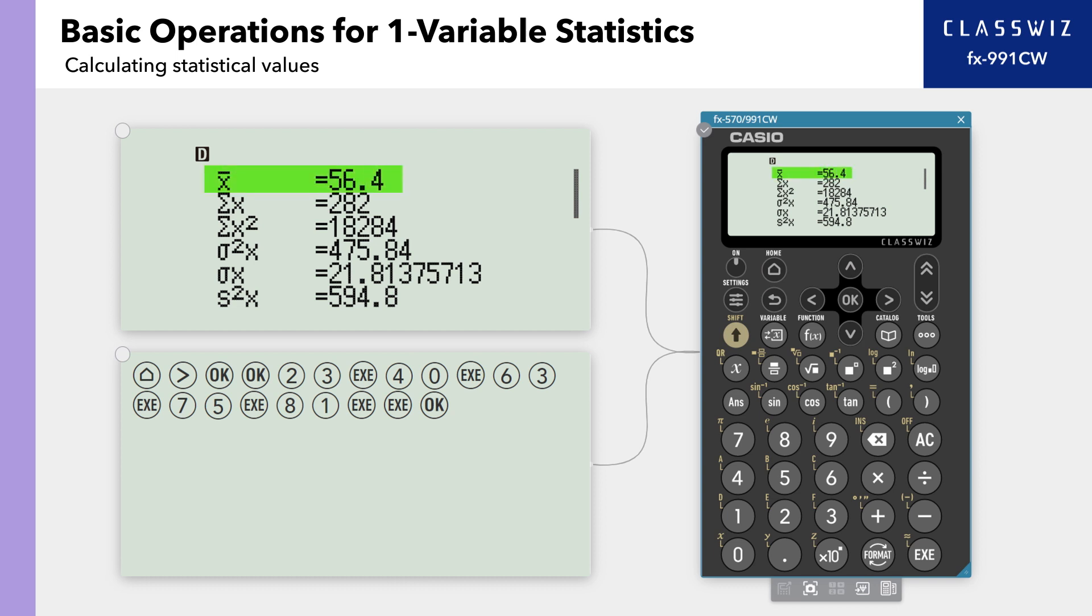Here, we can see that the mean of our data is 56.4, the variance is 475.84, and the standard deviation is 21.81375713.